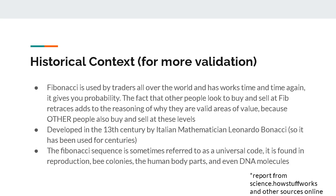For some historical context, Fibonacci is used by traders all over the world and has worked time and time again. It pretty much just gives you probability. Other people are looking at these Fibonacci levels and let's say they see a 50% or a 61.8% retrace in the golden zone — they're also going to be thinking, hey, I should sell here. With market psychology, there are other people reasoning to sell there, which means you could have a good chance of reversing there. It also means you have 61% off of a purchase if you're using Fibonacci to buy, meaning you're getting that purchase at more than half off of what it previously was.